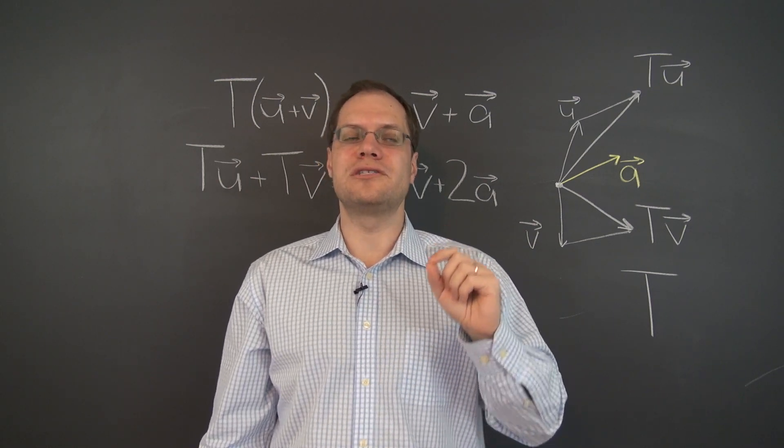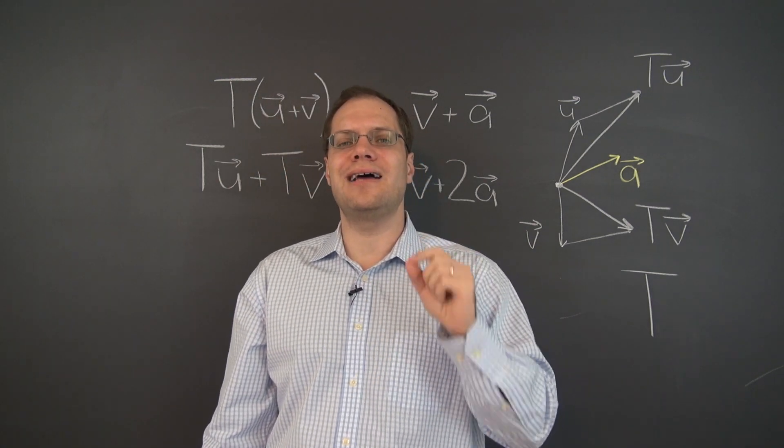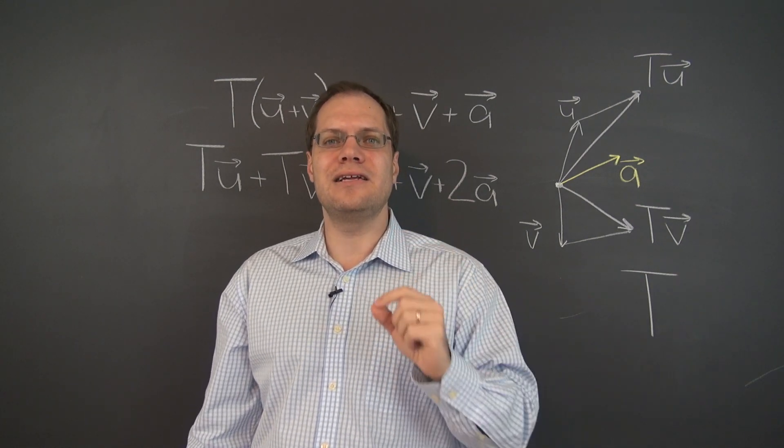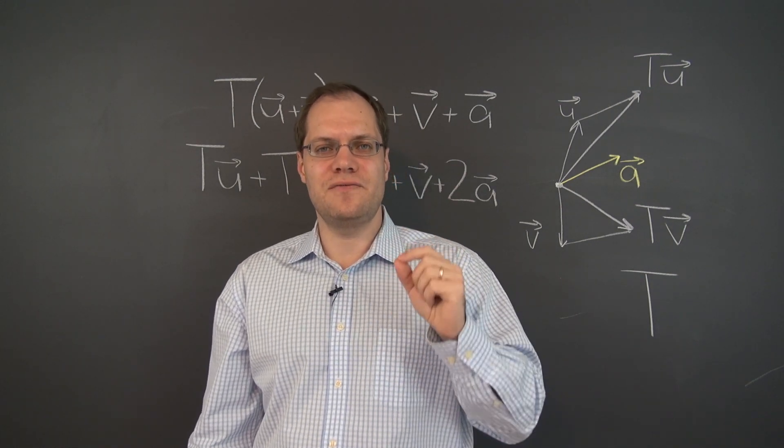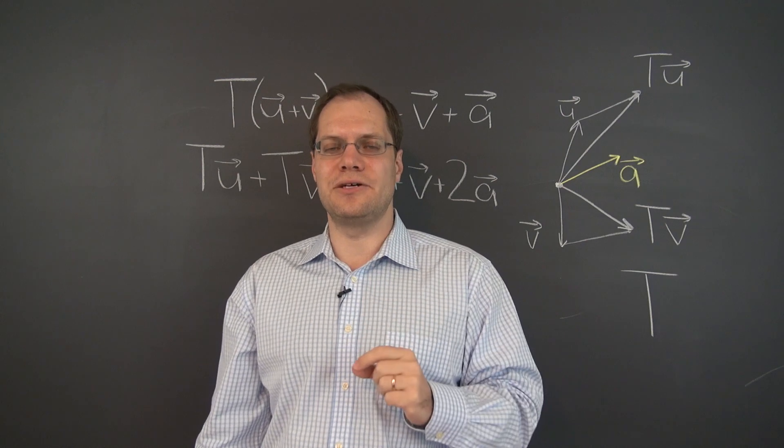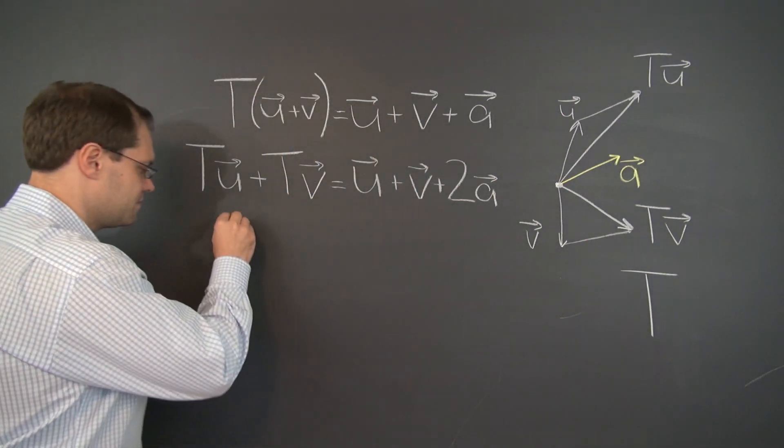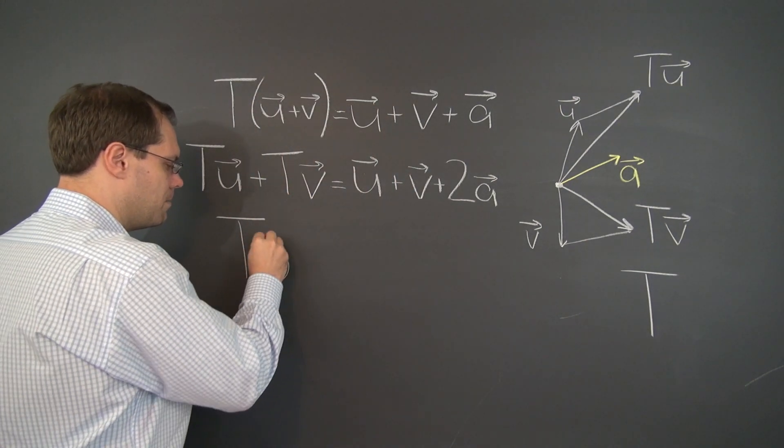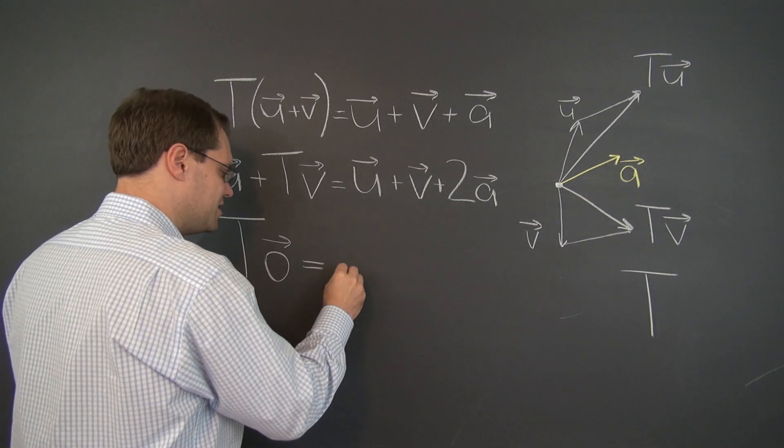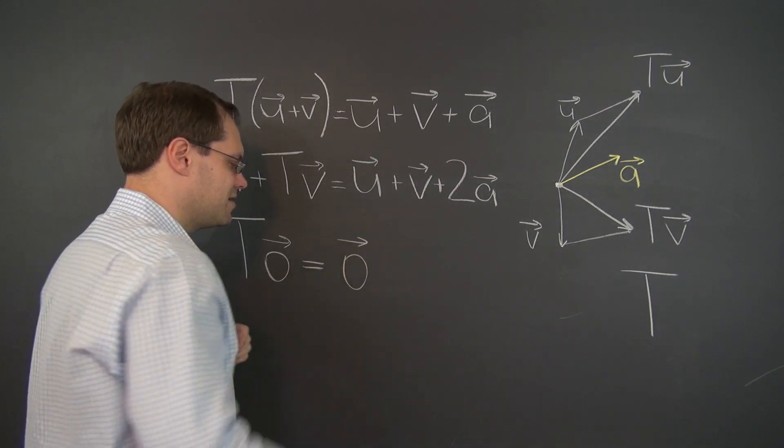And you will notice one dead giveaway of a transformation not being linear. For any linear transformation, the image of the zero vector is the zero vector. t of 0 must equal the zero vector.